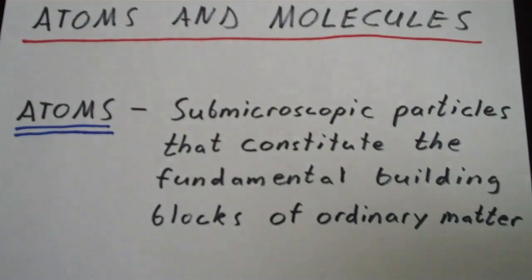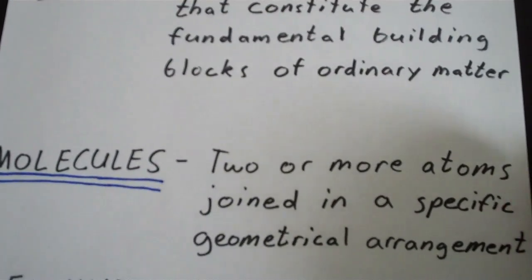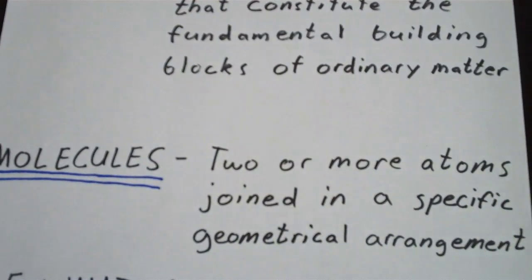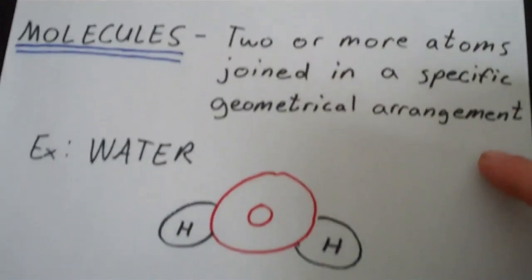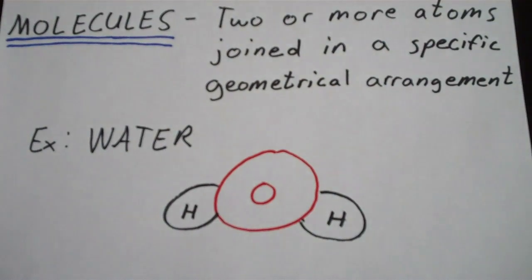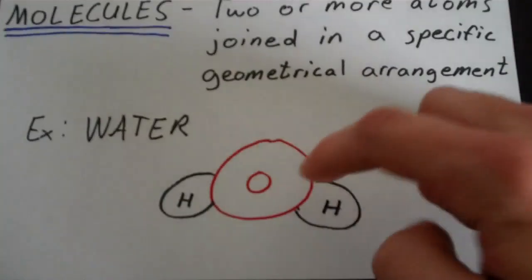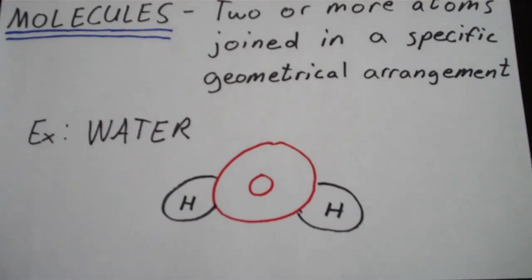Atoms are most commonly found in molecules. Molecules are two or more atoms joined in a specific geometrical arrangement. A classic example of a molecule is water — the stuff that covers about three quarters of our planet. Water is composed of one oxygen atom and two hydrogen atoms. The properties of all matter are determined by the properties of their constituent atoms and/or molecules.